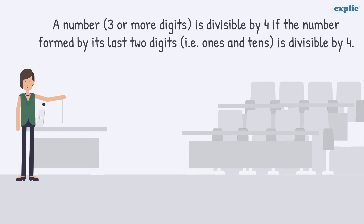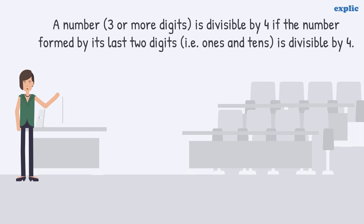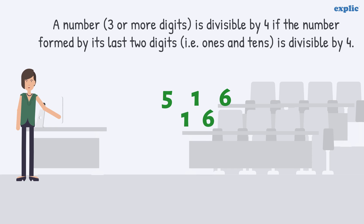A number is divisible by 4 if the number formed by its last two digits is divisible by 4. For example, 516 is divisible by 4 because 16 is divisible by 4.